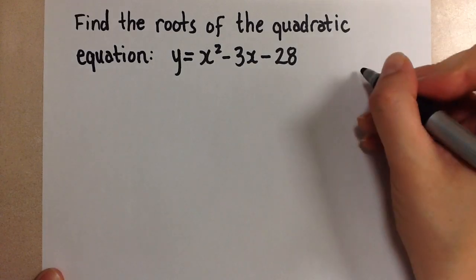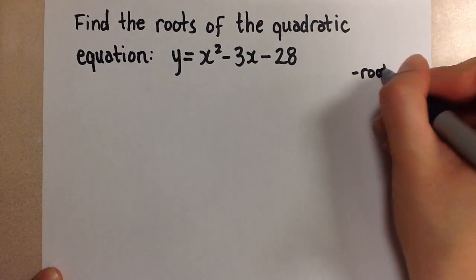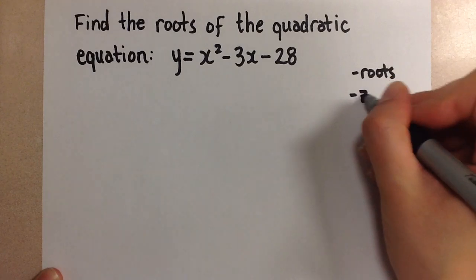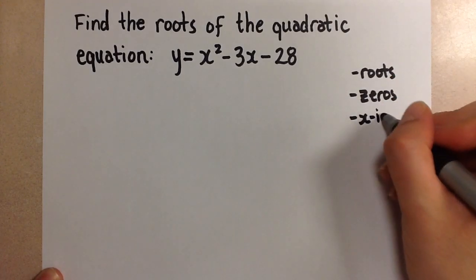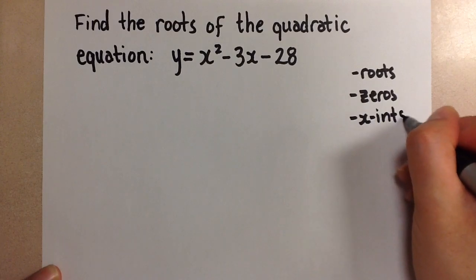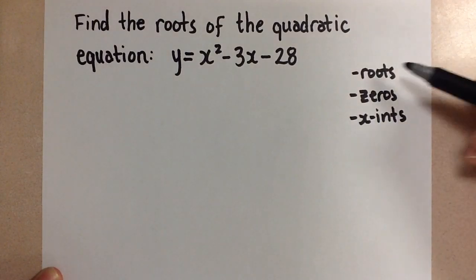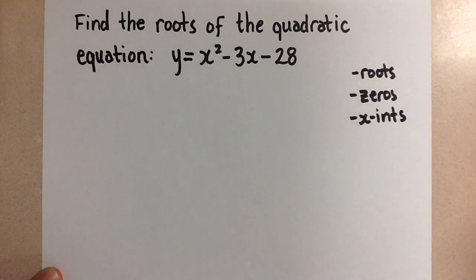Now remember that roots are the same thing as the zeros, which are the same thing as the x-intercepts for our parabola. So really finding the roots can mean any of these three things because they all mean the same thing.